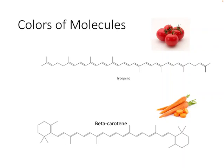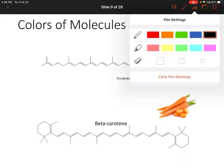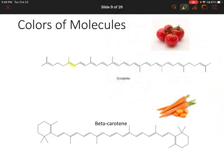In lycopene we have all of these conjugated pi bonds — counting them up, there are 11 pi bonds, which gives us 22 pi electrons.